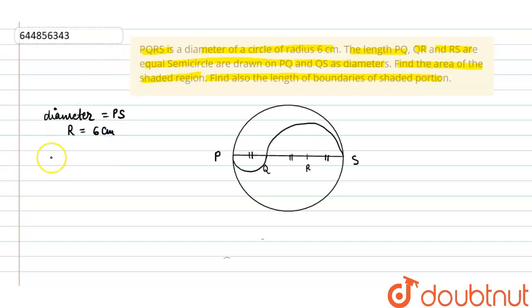As we know, area of semi-circle is πR² divided by 2. We have to find the area of shaded region. This is the shaded region that we have to find the area. To find only this part area, we can do one thing.